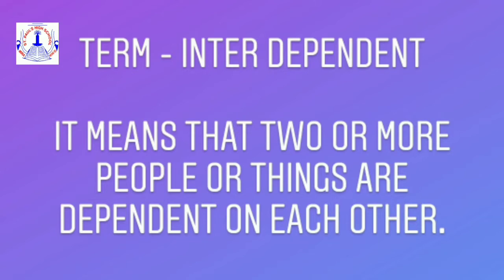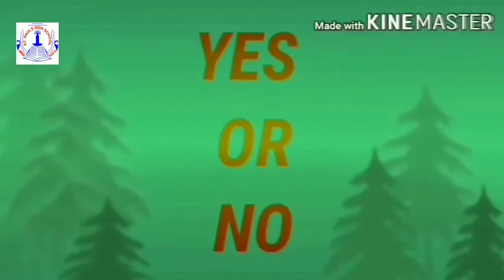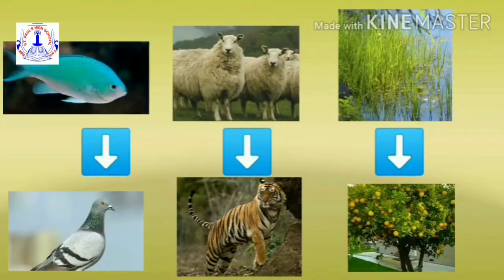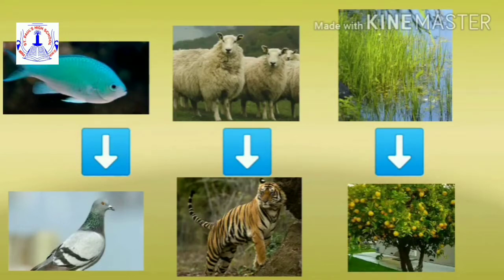Now let us understand the needs of living things. Do you think that the needs of all living things are the same? Let us see some examples. A fish can breathe in water, but can a pigeon do the same? A sheep eats leaves or grass, whereas a tiger does not eat the same. Bulrushes grow in water — they are aquatic plants. Aquatic plants means plants which grow in water. But can a lemon tree grow there? The answer to all these things is no. This shows that the needs of different living things are different.